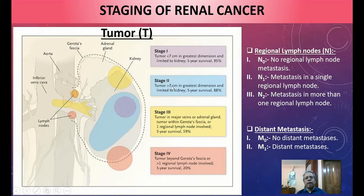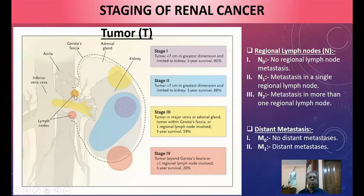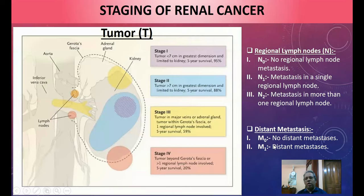For TNM categorization: N0 means no regional lymph node metastasis; N1 means single regional lymph node involvement; N2 means more than one regional lymph node involved. M1 denotes distant metastasis — cancer cells spread to bones, lungs, heart, etc. The tumor can enter the vena cava through the renal vein and potentially reach the heart.